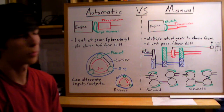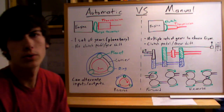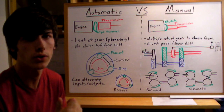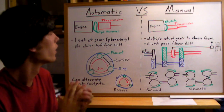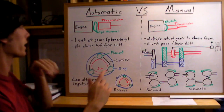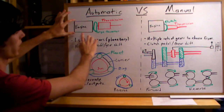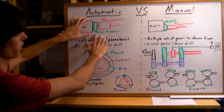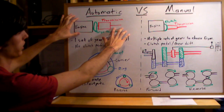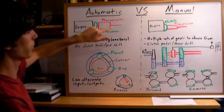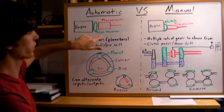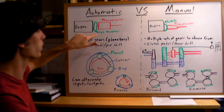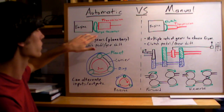I received a request to explain automatic versus manual and how cars with these different types of transmissions are different. In an automatic car you're going to have the engine connected to a torque converter, which will be connected to a transmission. I've attached a video of a torque converter — if you don't know how that works, that's a pretty important part of an automatic transmission.